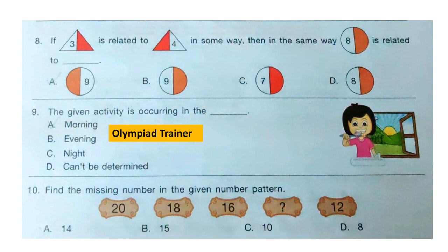Question 10: Find the missing number in the given number pattern. The pattern is 20, 18, 16, question mark, 12 — skip counting backwards by 2. So the answer will be 14. Option A.